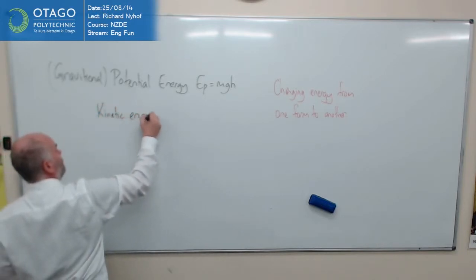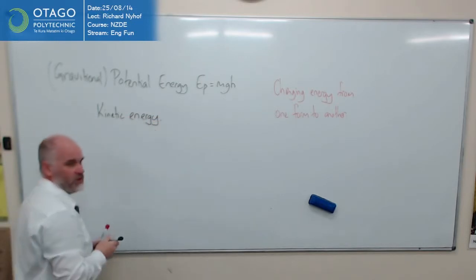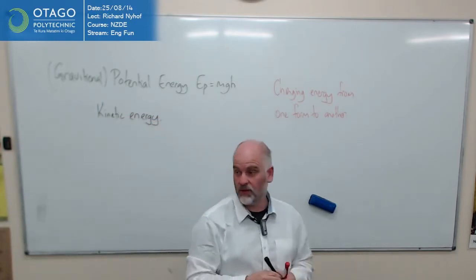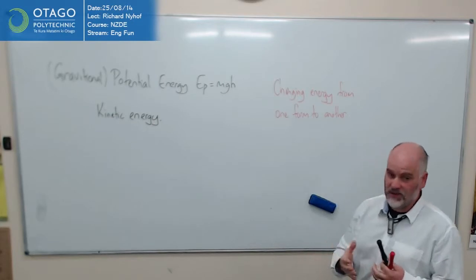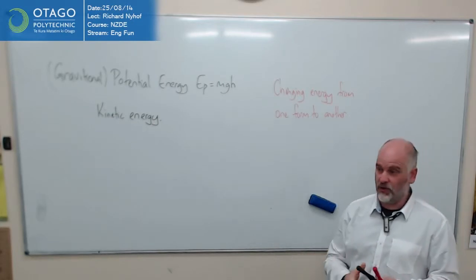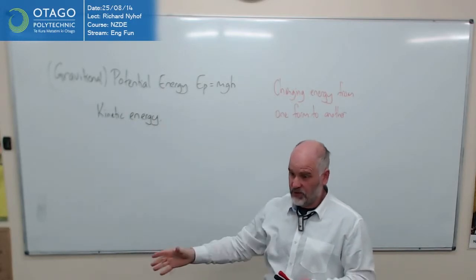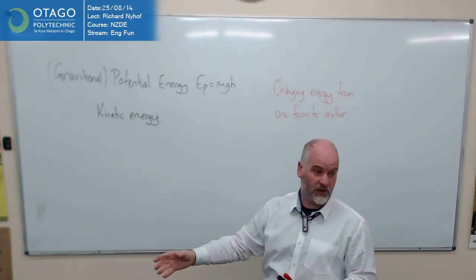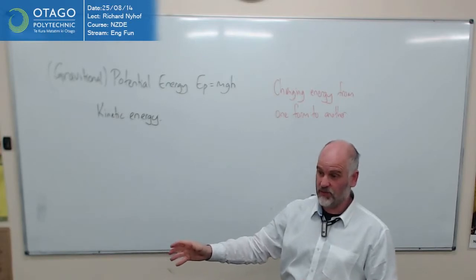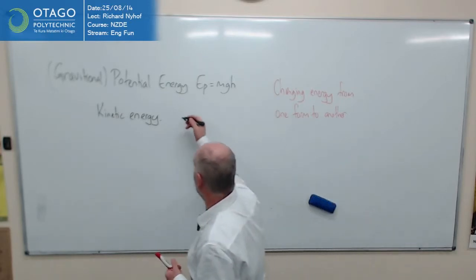So the fact that something is moving means it's got energy. So when I start the bottle off, it's stationary. When I let it go and it starts to fall, it's got speed. And that speed represents some energy. And we have a formula for that as well. Energy kinetic is one-half mv squared.